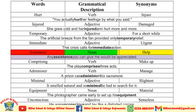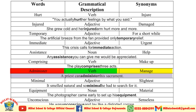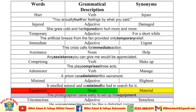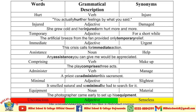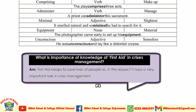'Immediate' (adjective), synonym: 'urgent.' Example: 'This crisis calls for immediate action.' 'Assistance' (noun), synonym: 'help.' Example: 'Any assistance you can give me would be appreciated.' 'Comprising' (verb), synonym: 'make up.' Example: 'The play comprises three acts.' 'Administer' (verb), synonym: 'manage.' Example: 'A priest can administer this sacrament.' 'Minimal' (adjective), synonym: 'slightest.' Example: 'It smelled natural and so minimal he had to search for it.' 'Equipment' (noun), synonym: 'material.' Example: 'The photographer came early to set up his equipment.' 'Unconscious' (adjective), synonym: 'senseless.'